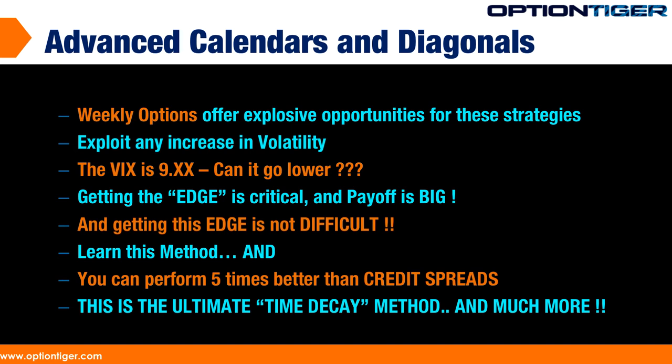This is an ultimate time decay strategy and also an ultimate volatility increase strategy. Given that the VIX is at 9 and 10, it's really the ideal time to be playing these calendars and diagonals until this kind of trading environment changes.